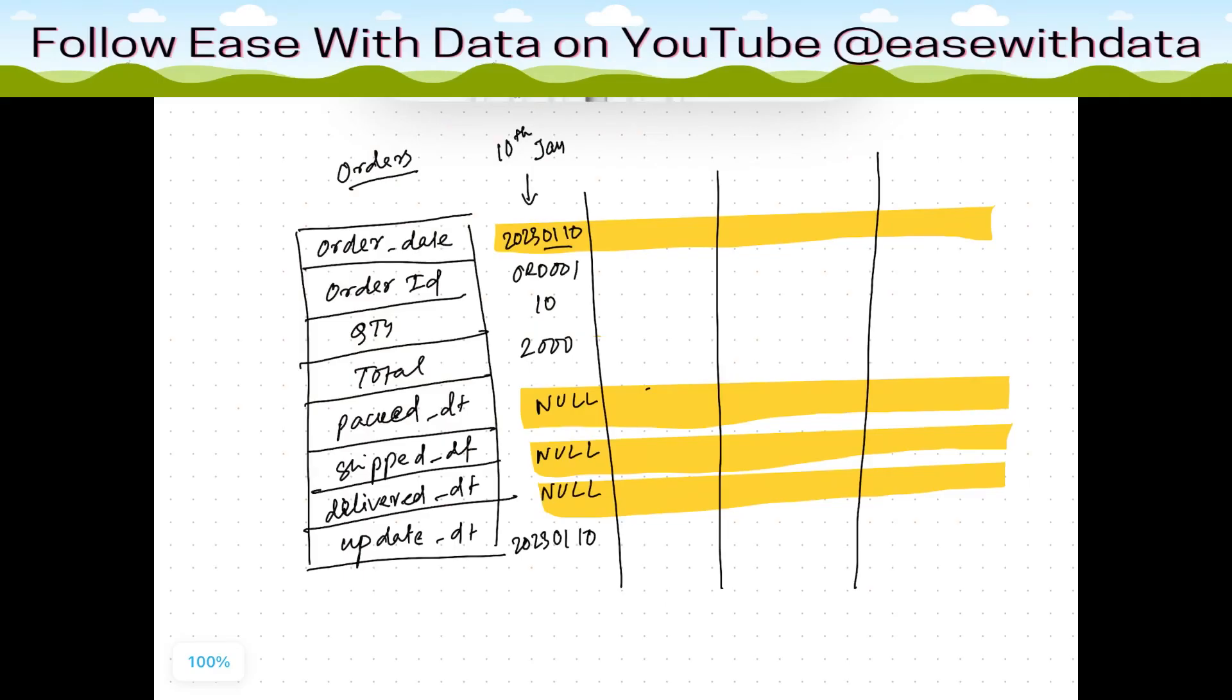Let's discuss accumulating snapshot fact. Consider we have an orders fact where we have information like order date, order ID, quantity, total, pack date, ship date, deliver date, and update date.